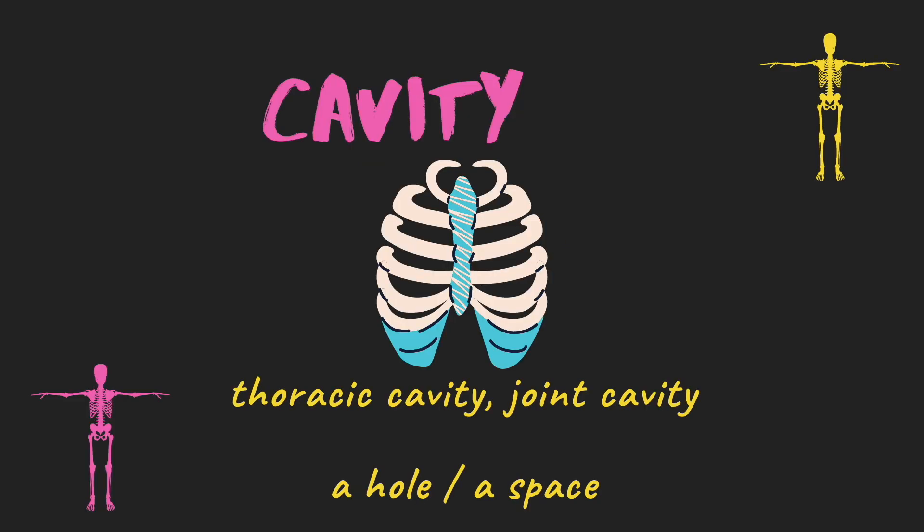Next we have 'cavity' — it means a hole. You go to the dentist and they say you've got a cavity; it means a hole in your tooth. A cavity is the same thing throughout anatomy. We've got the thoracic cavity — the hole within your ribs — the joint cavity — the hole within your joint — and the marrow cavity, where the marrow is inside. Things exist within these cavities, within that space.